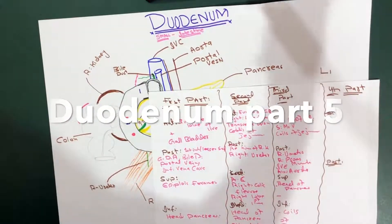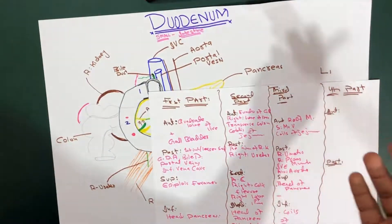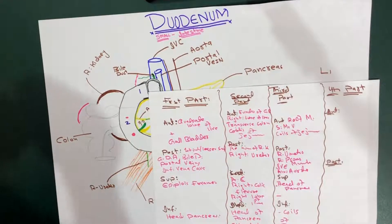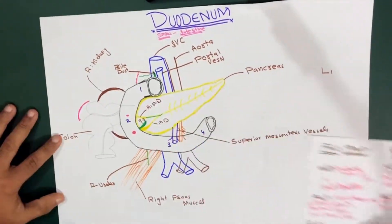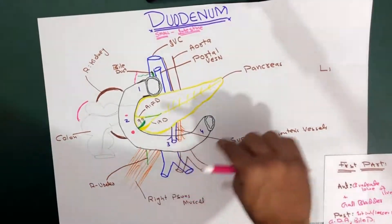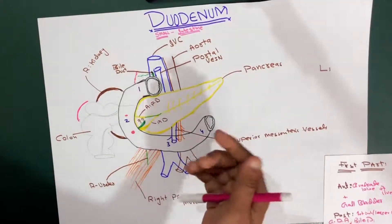Now let's talk about the fourth part of the duodenum. In order to discuss the fourth part, we must first go through the theory. The fourth part of the duodenum is taking a turn upward, so you can say the fourth part of the duodenum runs upward.